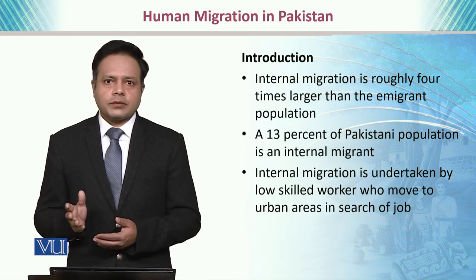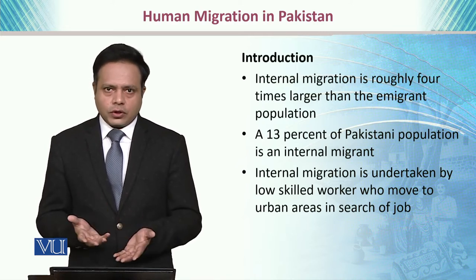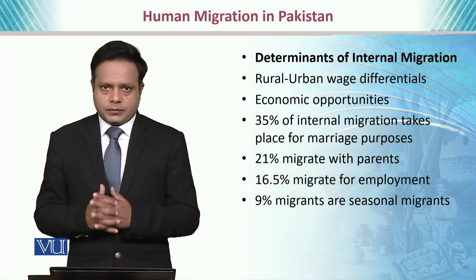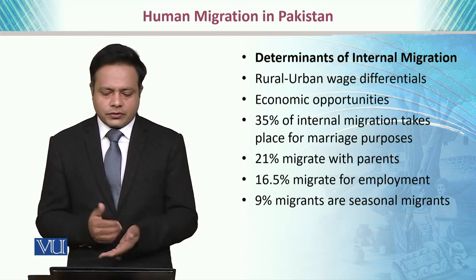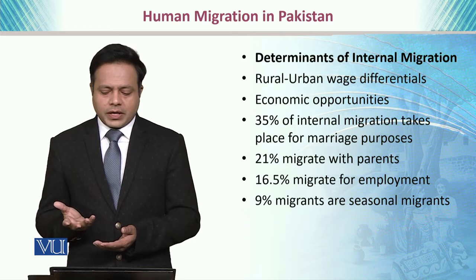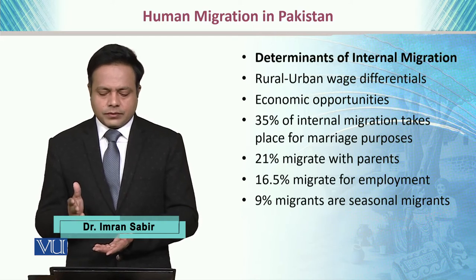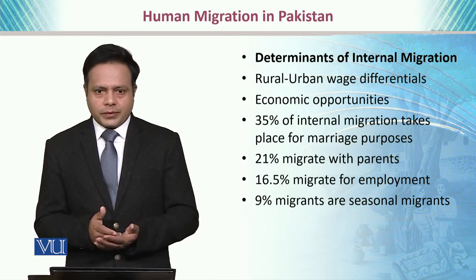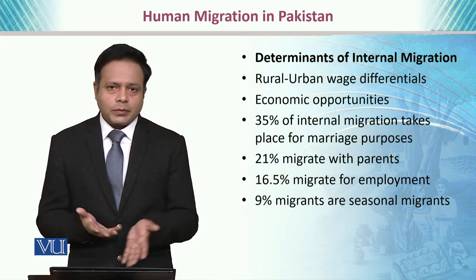Internal migration is undertaken by low-skilled workers who move to urban areas in search of jobs or their livelihood. There are certain determinants of internal migration, for example, rural-urban wage differences or differences in amenities of life and economic opportunities. 35% of internal migration takes place for marriage purposes, whereas 21% migrate with their parents, 16% migrate for employment purposes, and 9% of the migrants are seasonal migrants.